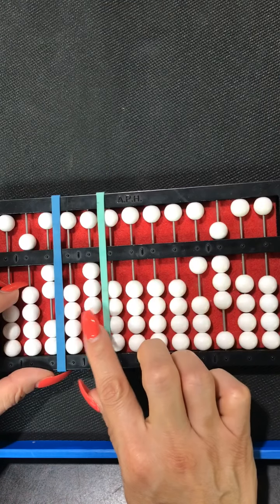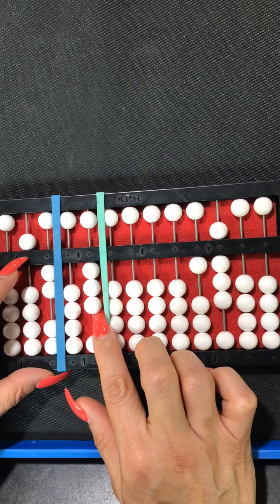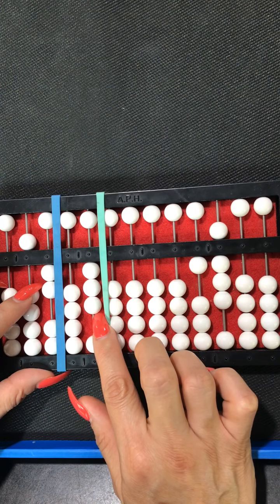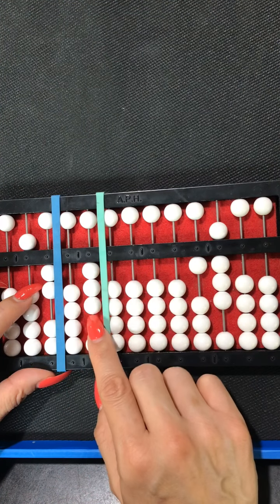And because we've set that up already so 3 times 6 is 18 we clear that because we're done and now we move on and we say what's 3 times 5, 3 times 5 is 15 that's right or it's 3 times 50.